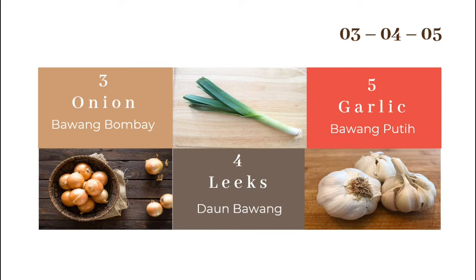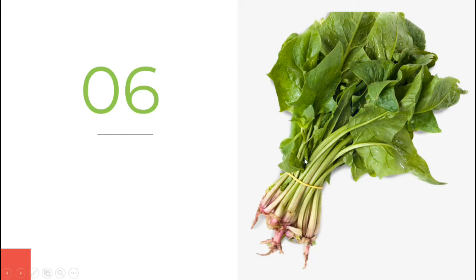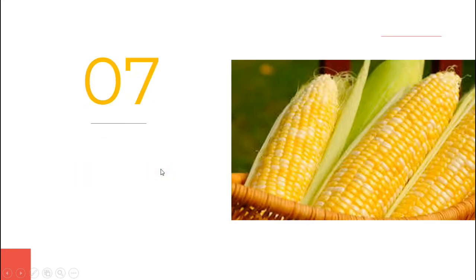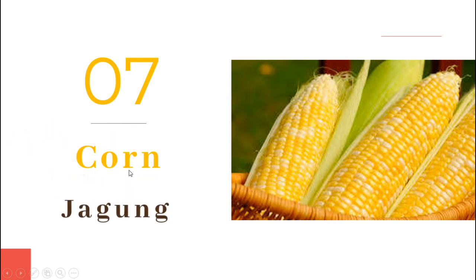Sekarang kita masuk ke number six. Di sini ada sayuran hijau namanya adalah spinach. S-P-I-N-A-C-H. Spinach. Spinach adalah bayam. Jadi kalau sayur bayam itu namanya adalah spinach. Number seven, di sini ada sayur yang warnanya kuning dan kulitnya berwarna hijau. The name is corn. C-O-R-N. Corn. Bahasa Indonesia-nya adalah jagung. Jadi, corn adalah jagung.